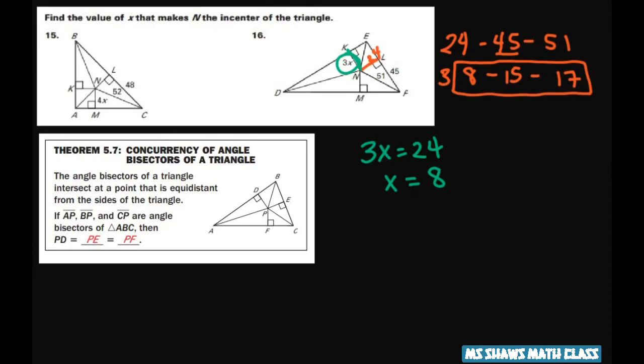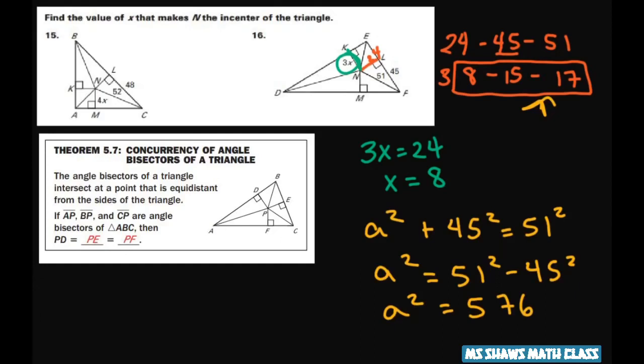If not, you would have to use the Pythagorean theorem. If you didn't do it this way, you would get a squared plus 45 squared equals 51 squared. And you would get a squared is 51 squared minus 45 squared. And that would give you a squared equals 576. You square root both sides. You take the positive square root. You get a equals 24.